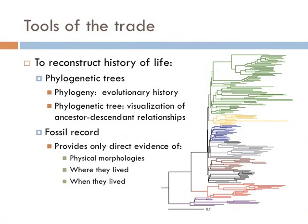A phylogenetic tree is a visualization of ancestor-descendant relationships through time. The closer together different taxa are represented in a phylogenetic tree, the more closely related they are to each other. We use a combination of comparing DNA among species as well as morphological characteristics. However, fossils are the only record that provides direct evidence of physical morphologies, where those species lived, and when they lived there.